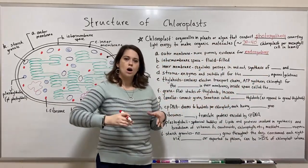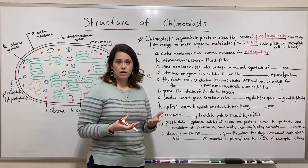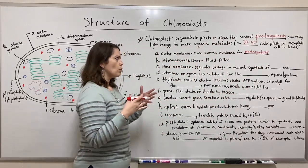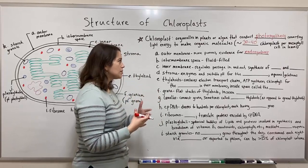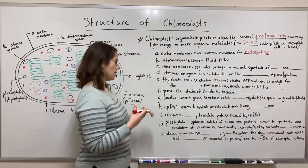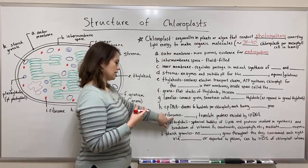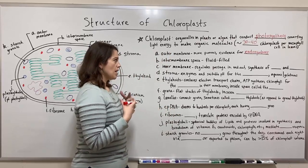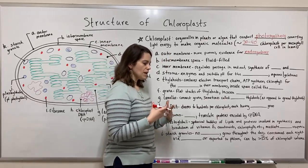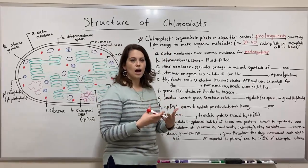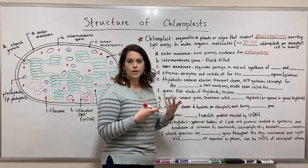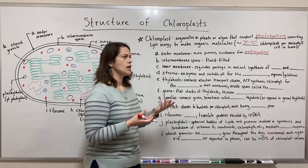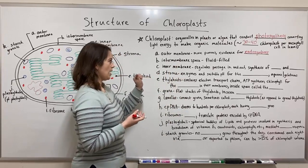I have another video on endosymbiosis and the endosymbiotic theory where we learn about the different types of evidence, including the outer membrane and also the 70S ribosome we'll talk about in a little bit — evidence for basically the evolution of mitochondria and chloroplasts from endosymbiotic events. So if you're interested, definitely check that video out.